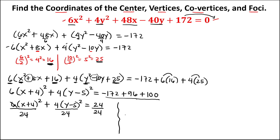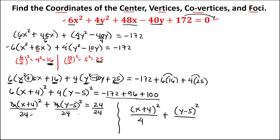After dividing by 24: the x term gives (x + 4)² over 4 (since 24/6 = 4), and the y term gives (y − 5)² over 6 (since 24/4 = 6), equals 1. This is now the standard equation of the ellipse.